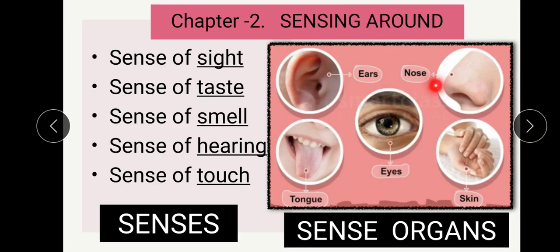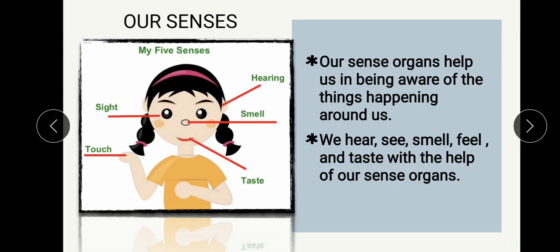The sense organs are eyes, ears, nose, tongue, and skin. Sense organs make us aware of the things happening around us - they tell you what is going on around you. For example, when someone calls your name, you immediately turn around and look in the direction where you heard that voice or sound.